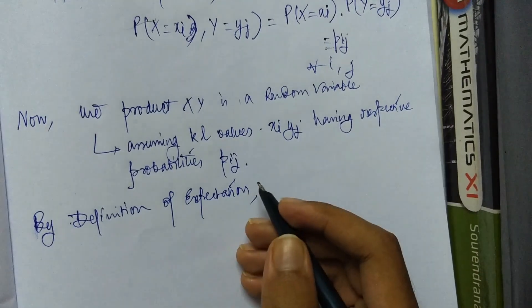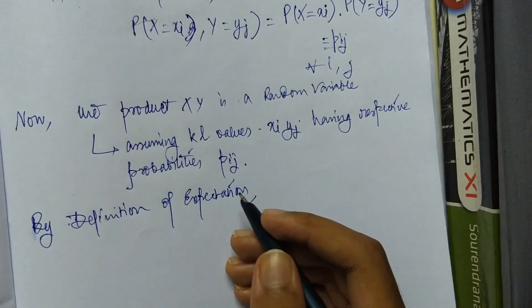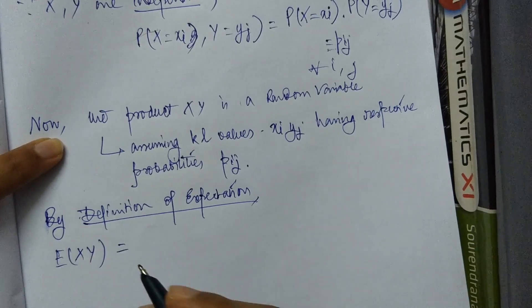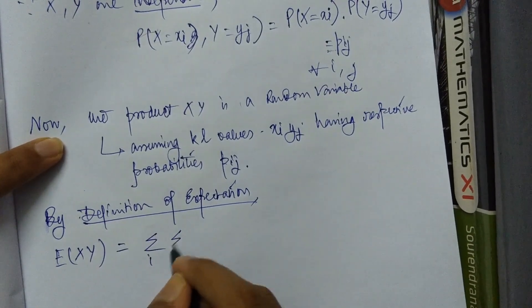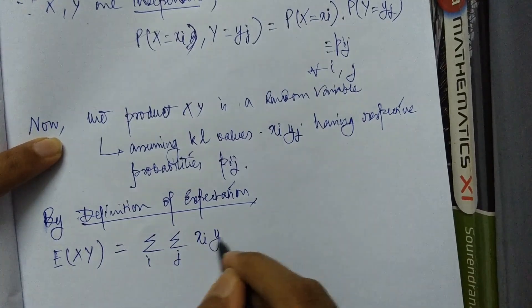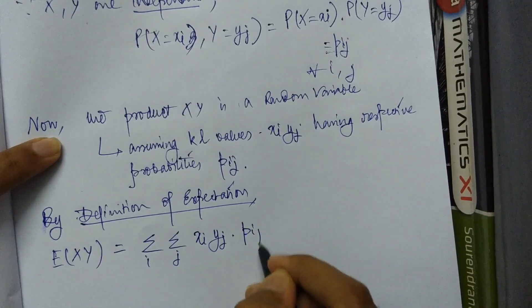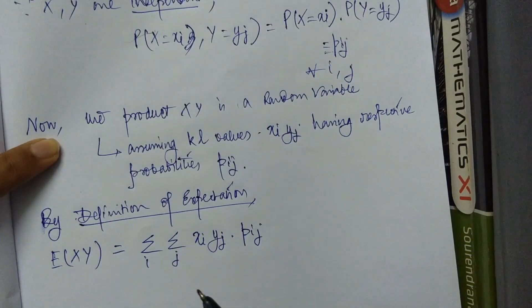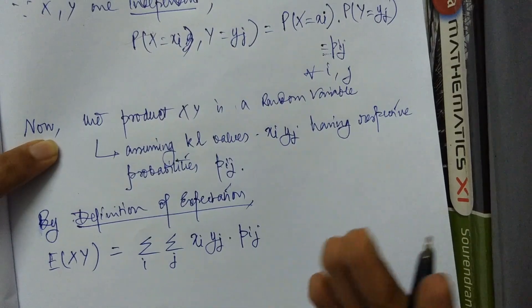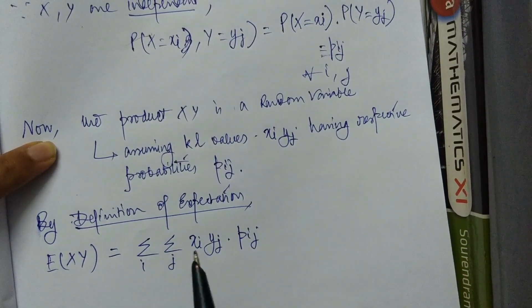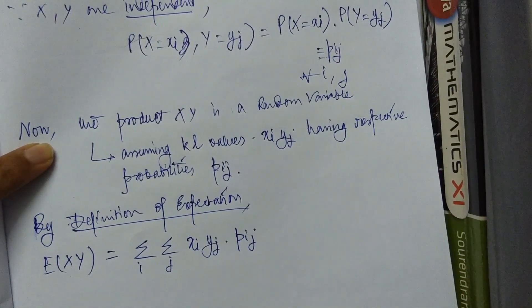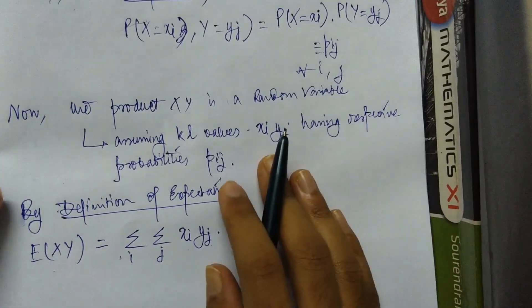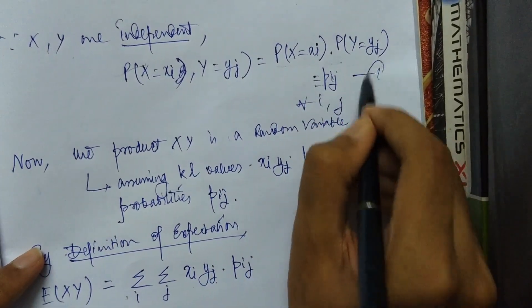Therefore, by the definition of expectation, we have E[XY] equals summation over i and summation over j of xi·yj times p_ij. The expectation is defined as the summation over all possible values of the random variable, so E[XY] = Σi Σj xi·yj·p_ij.